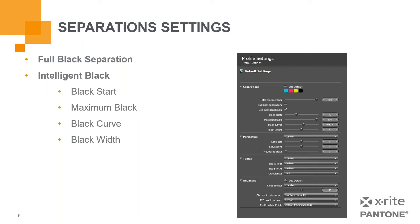Finally, there is black width. Blacks are usually used in the reproduction of grays and desaturated colors. However, black may also be used to reproduce more saturated colors and even extend the range of a saturated color that your printer can't produce. Increasing the black width increases the use of black when separating saturated colors. Decreasing the slider restricts the use of black in a separation to more desaturated colors and grays.